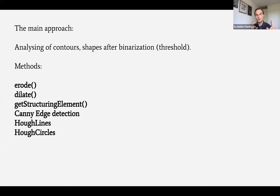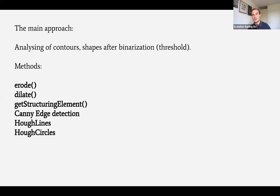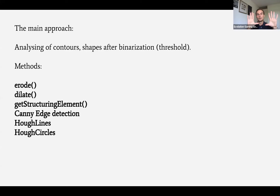Dilate is the opposite of erode. If you have two disconnected shapes — say you're recognizing a white car but a tree shadow split it into left and right parts — dilate grows the pixels around shapes to join two objects together. Get Structuring Element is another function that allows you to manipulate pixels with different parameters for growing or reducing pixels.